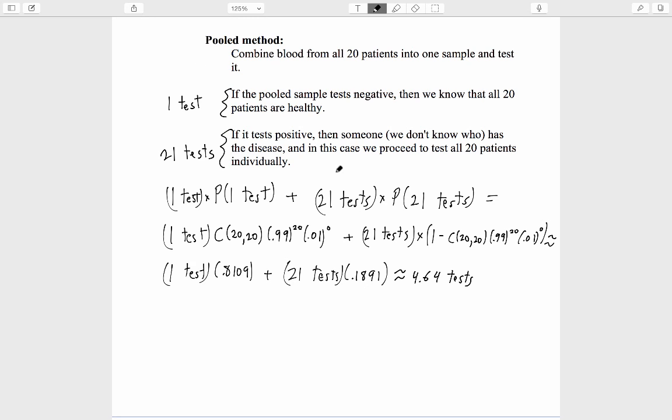That makes the pooled method much more efficient than the individual method, which required 20 tests. That difference between an average of 4.64 tests for every 20 patients and 20 tests for every 20 patients adds up to serious money if each test is expensive.